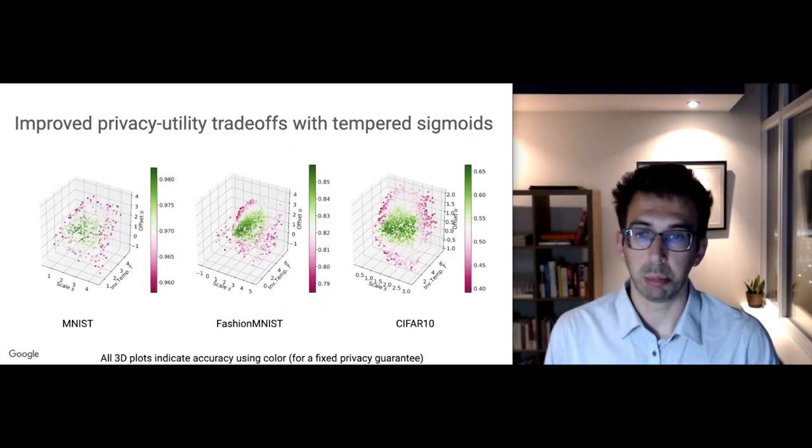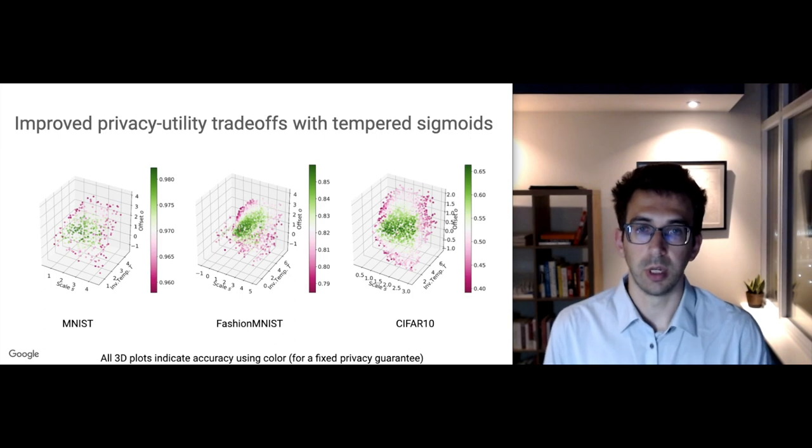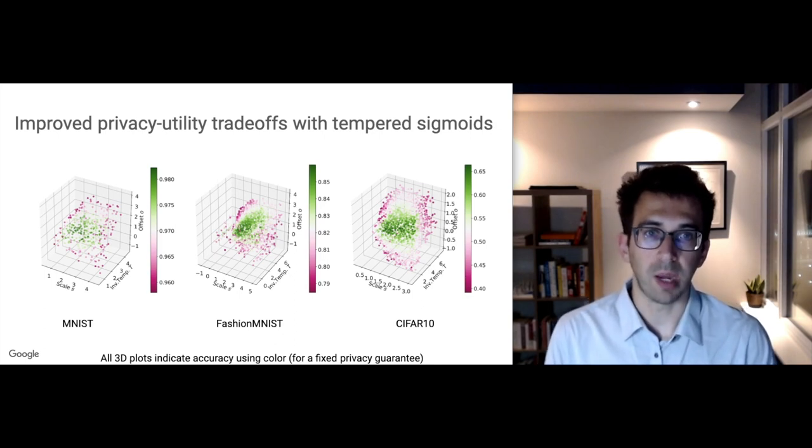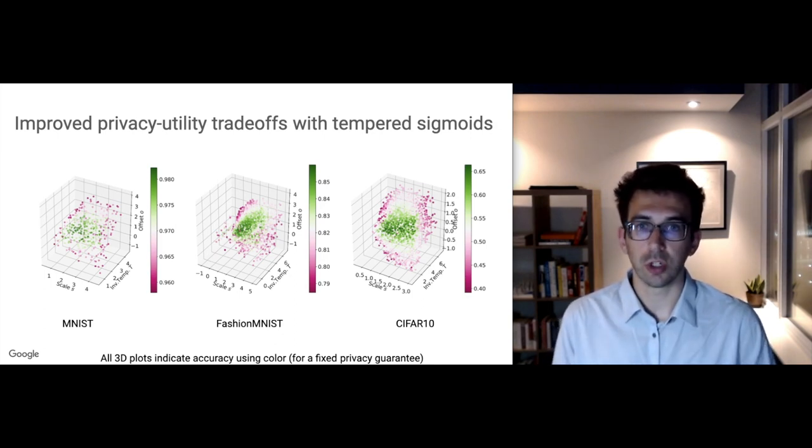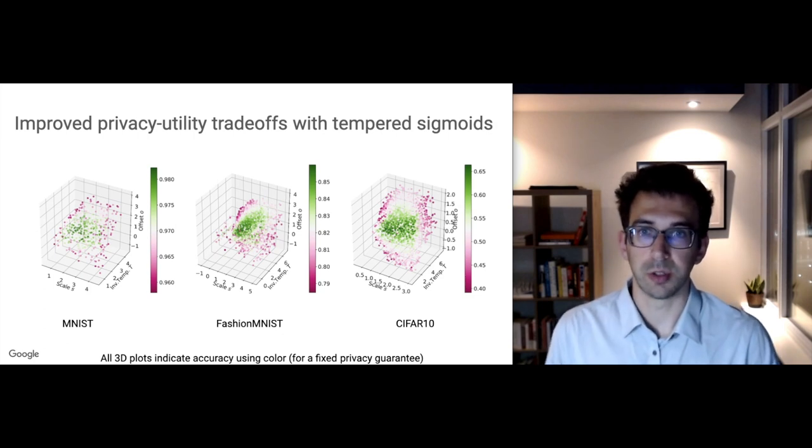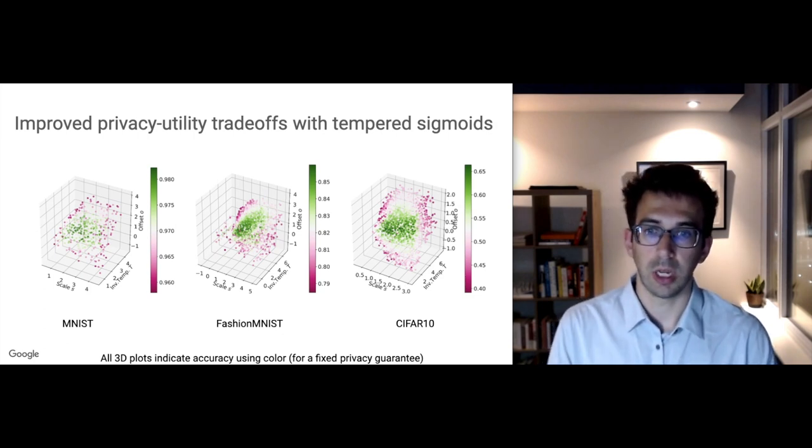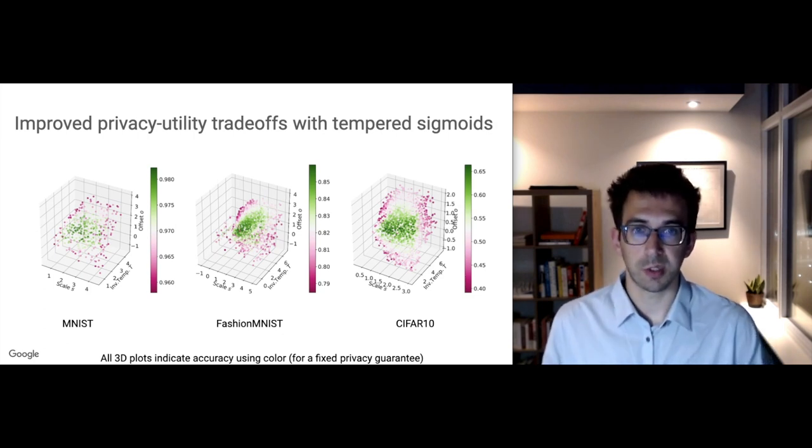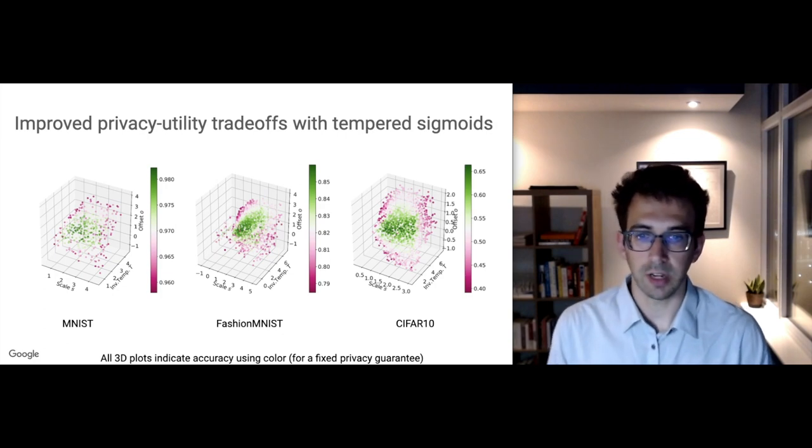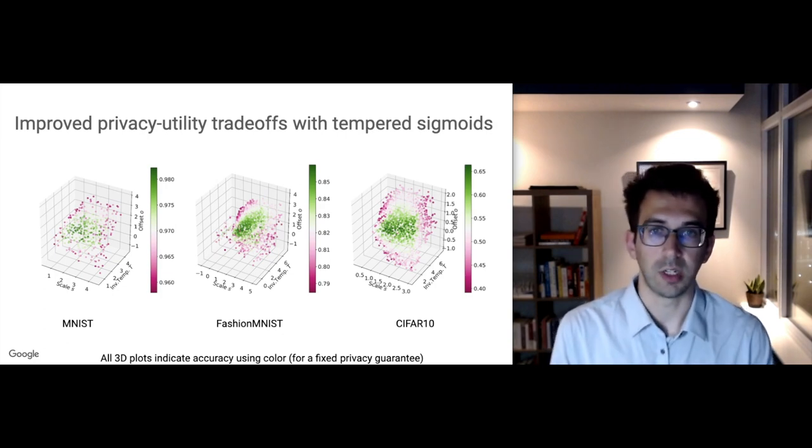In this figure, I plotted the test accuracy of a bunch of models trained with tempered sigmoids as a function of these three parameters—the scale, the inverse temperature and the offset. You can see results plotted on MNIST on the left, Fashion MNIST in the middle and CIFAR-10 to the right. All of these models were trained with differentially private stochastic gradient descent, and the color of each dot which corresponds to one training run indicates the accuracy, the test accuracy, that the model achieved.